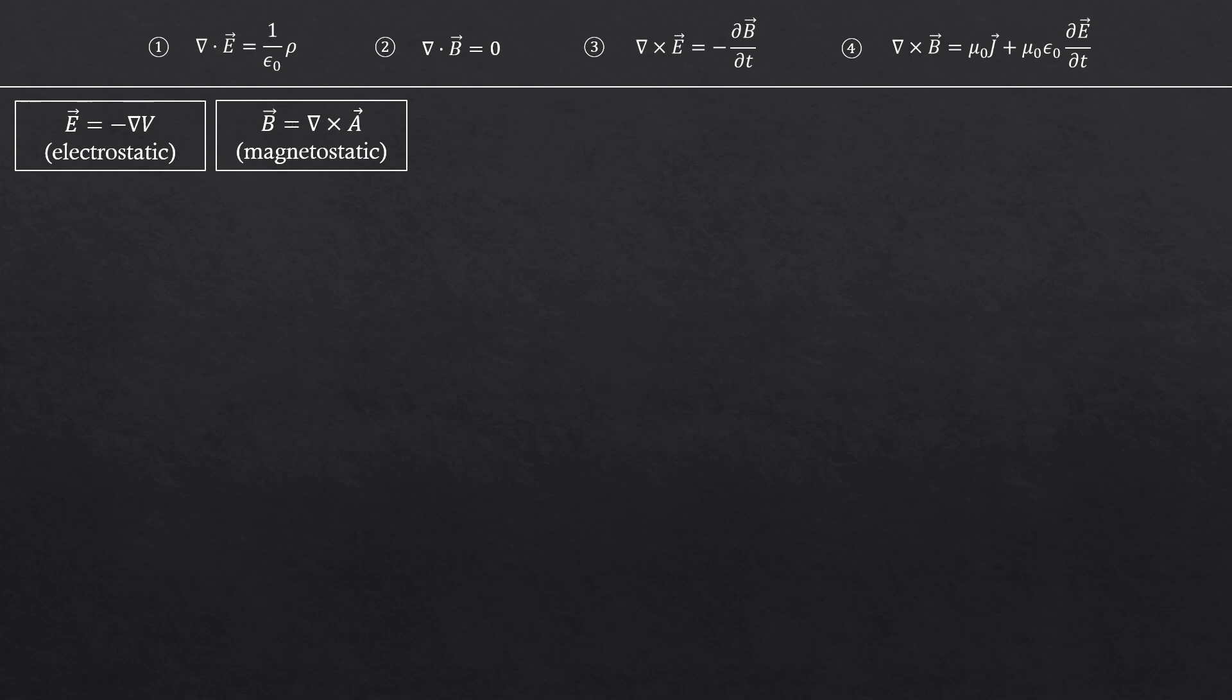Alright, let's go back to our topic now. With these definitions, let's try to convert the Maxwell's equations so they are expressed in terms of the potentials. Let's look at the third Maxwell's equation. According to the definition above, we could replace the magnetic field with a curl of the vector potential.